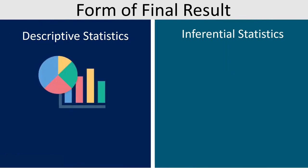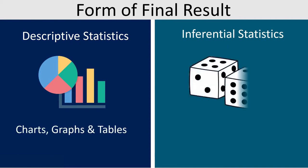Form of final results: There is a chart, graph and tables representation of final results in descriptive statistics. Whereas, the final result in inferential statistics is displayed in the form of probability.